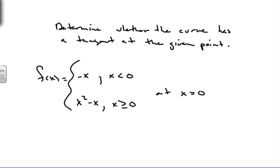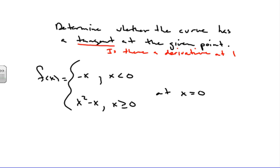We're going to go through an example of how to determine whether a curve has a tangent at a given point. To figure out if a curve has a tangent at a given point, what that means is: do we have a derivative at the given point? Is there a slope of the curve at that point? So we're looking for: is there a derivative?